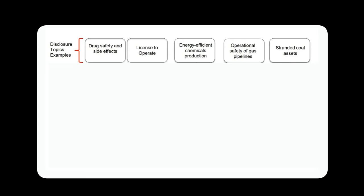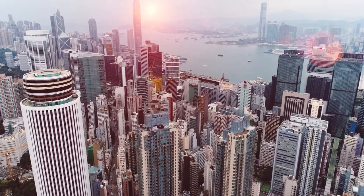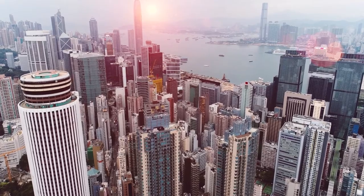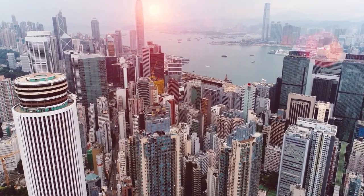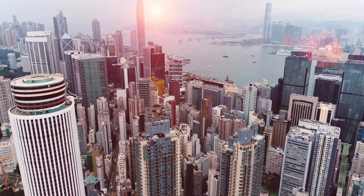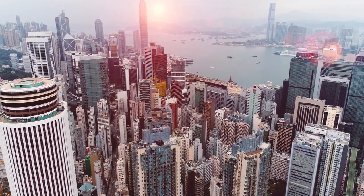Sustainability accounting standards identify specific non-financial issues that tie into companies' costs, revenues, growth potential, cost of capital, and assets and liabilities. For each sector of activity, SASB standards provide specific accounting metrics to account for financially material ESG factors.